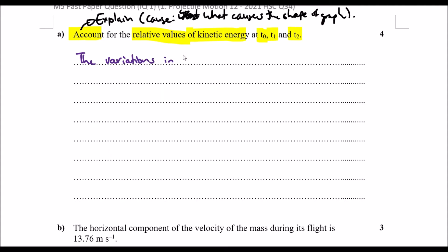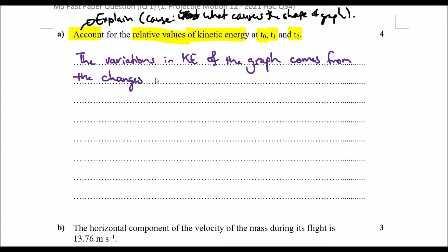The variations in change in KE of the graph come from the changes in the vertical velocity of our projectile.